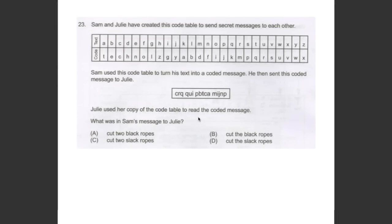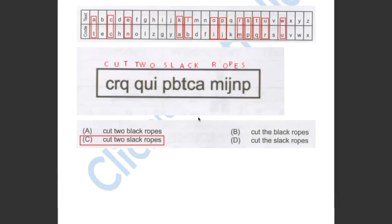This question asks us what was in Sam's message to Julie. As you can see, the letters C, R, Q, Q, U, I, P, B, T, C, A, M, I, J, M, P decode to mean 'cut to slack ropes.' So the answer has to be C.